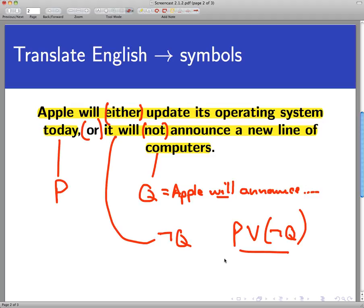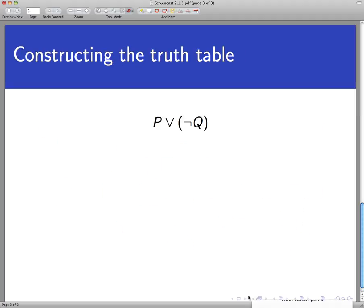Now that's a compound statement. Notice that involves two statements itself, P and Q. And so whether the entire statement is true or not depends on whether P is true and whether Q is true. And that's where the truth table comes in. A truth table is a table that records all the possible truth values of P and Q and follows the consequences to see whether the large statement that we're interested in is true or false under each condition.